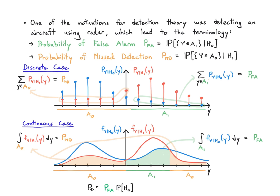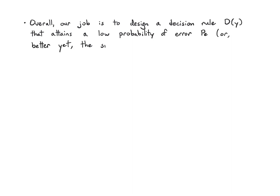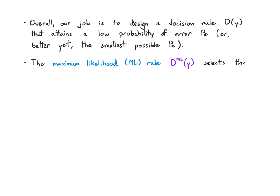The overall probability of error is just the weighted sum of false alarm and missed detection. Our job overall is to design a decision rule d(y) that gets a low probability of error. The best thing is to design a decision rule that guarantees the smallest possible probability of error. One option is to use the maximum likelihood, or ML rule, dML, which picks the hypothesis with the highest likelihood value.